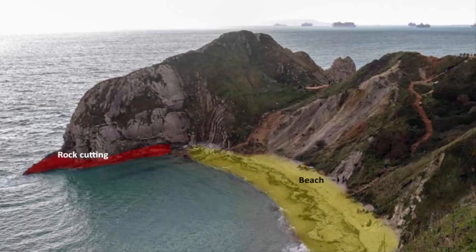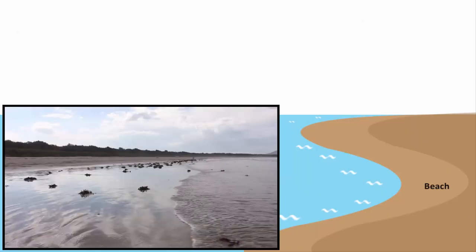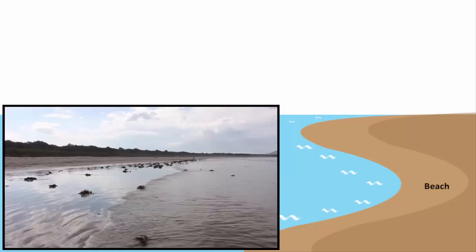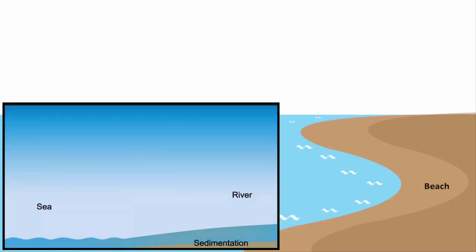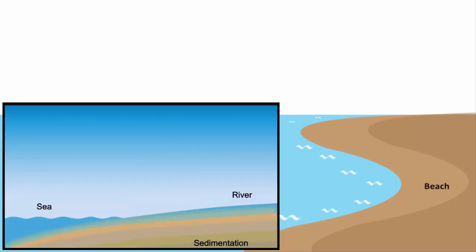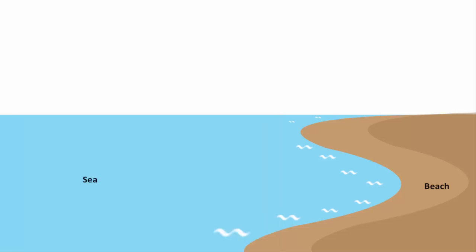Depending on the strength of the waves, these sediments will spread along the coastline to create a beach. The shape of a beach keeps changing. Strong waves and movement of water and also weather can significantly alter a beach almost every day, bringing new shapes to the coastal landscape.